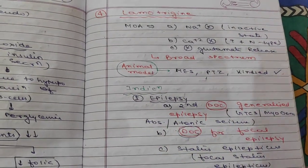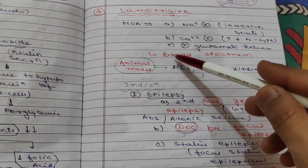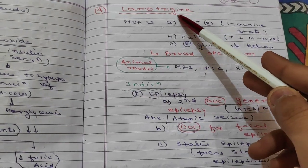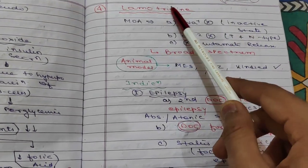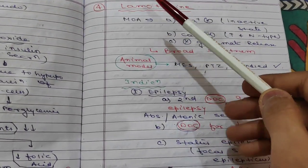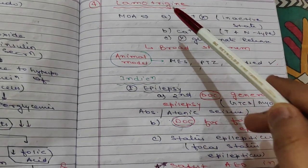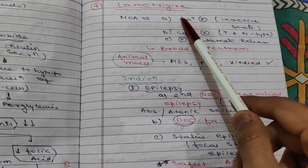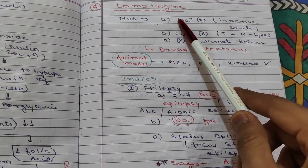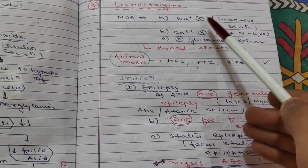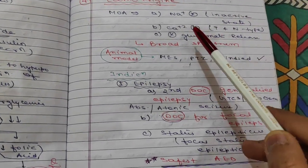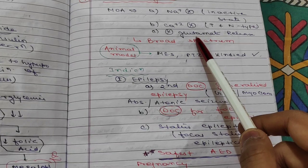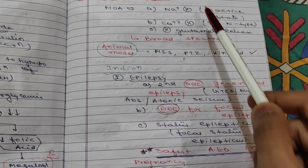In this video we are going to discuss another important drug category under anti-epileptics — that is lamotrigine. Along with lamotrigine, we will also discuss other drugs. The mechanism of action: it causes inactivation of the sodium channel and prolongs the inactivation of the sodium channel. It also inhibits the calcium channel and inhibits glutamate release.